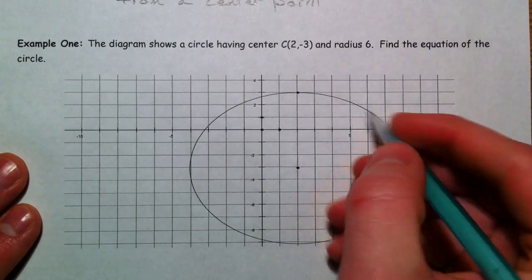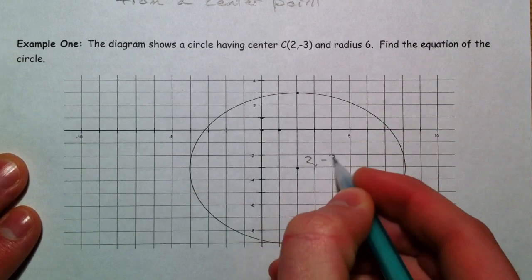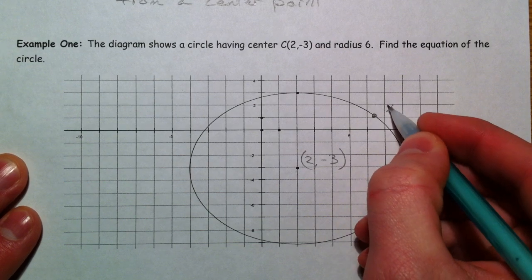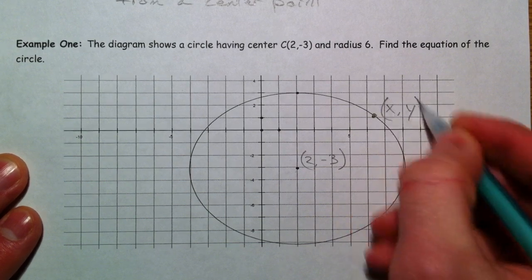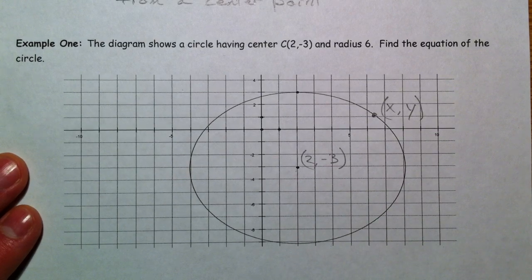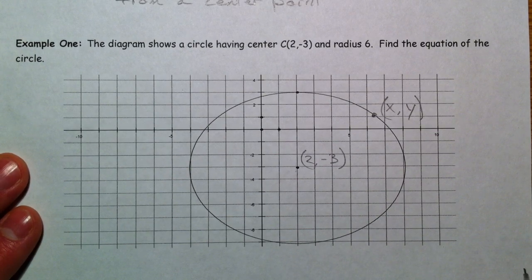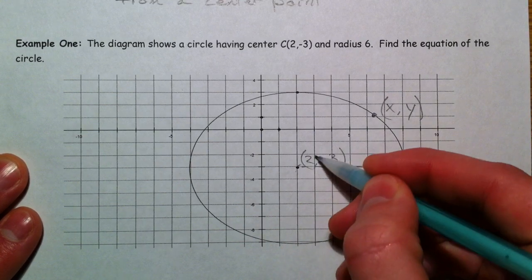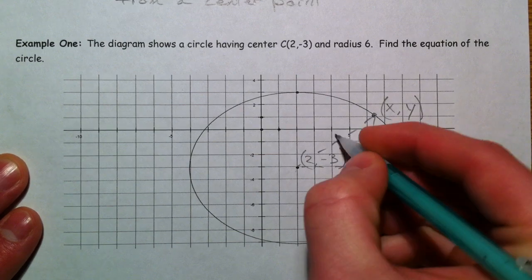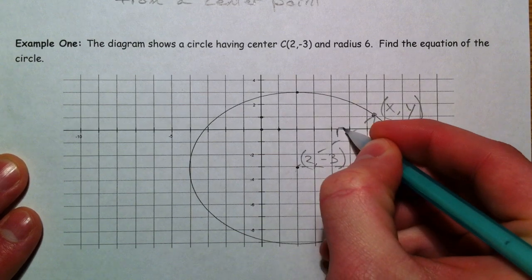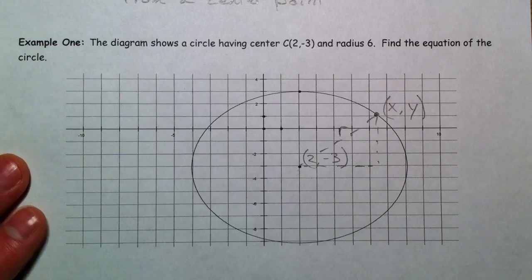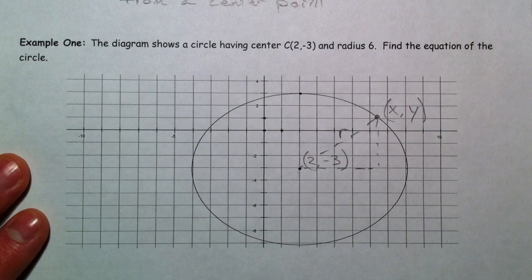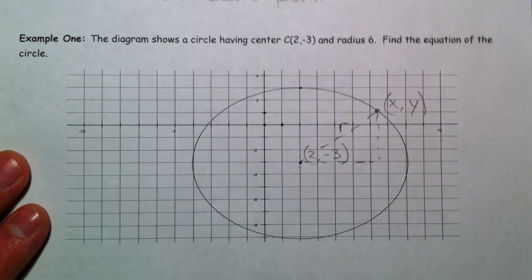But we're going to find the equation of a circle. So, this point is 2, negative 3. And every point, call this every point x, y, is equidistant. Sounds an awful lot like the distance formula. And so, what I'm going to do is make this into that right triangle that we had before. And so, this is going to be our r. We know that the r is 6 because it's 6 all the way around. That's why it's called the radius. That's how a circle is defined.